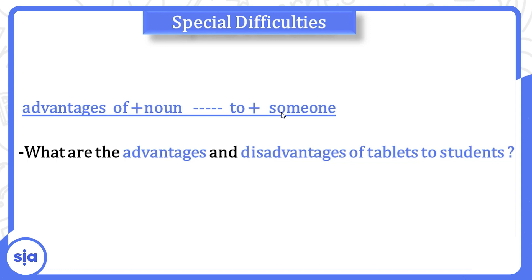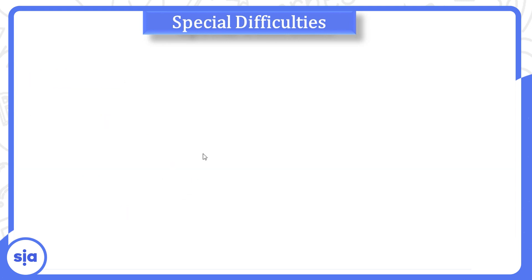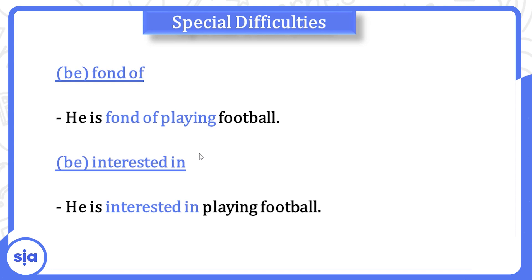'Be keen on' means he likes something — حريص على. Example: He is keen on playing football / He is keen to play football. 'Be fond of' — مغرم بـ — He is fond of playing football; always use 'fond of.' 'Be interested in' — مهتم بـ — He is interested in playing football. Always use the preposition 'in' with 'interested' — interested in مهتم بـ.